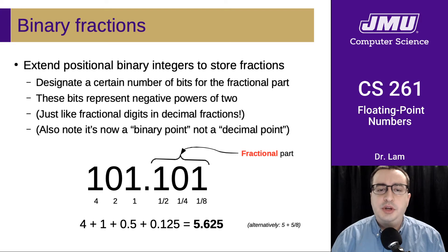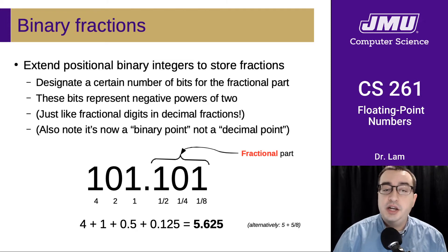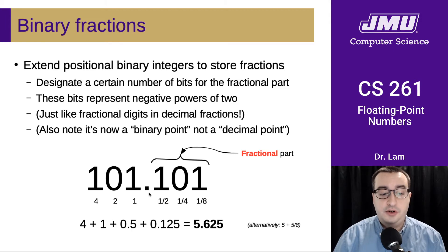We talked last time about how we can extend positional binary integers to store fractions simply by adding more digits after the fractional point. You'd have the normal bits on the left side that represent the whole numbers, the integers, and then you have the fractional part that is to the right of the point.